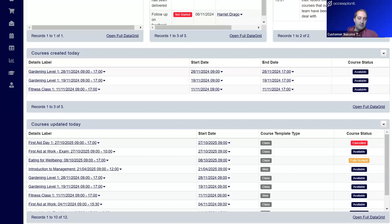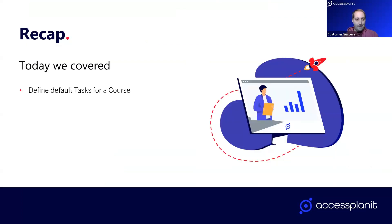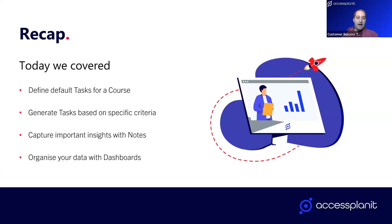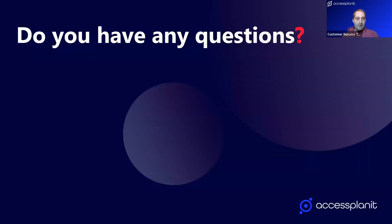As a reminder, if you'd like to create any of these dashboard areas or gadgets, get in touch with the support team — the help guide pages are really good, but the support team is available too. Today we covered: defining default tasks for a course, generating tasks based on certain criteria, capturing important insights with notes, and organizing your data within dashboards. The Q&A box is open — please pop any questions in there. We'll go through some common questions we get asked.